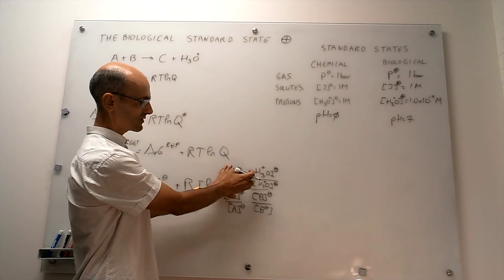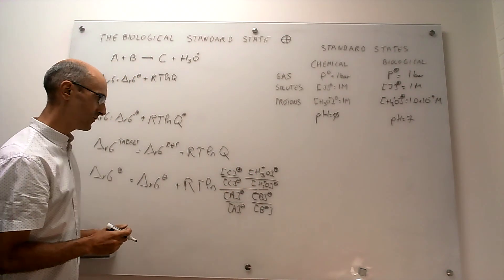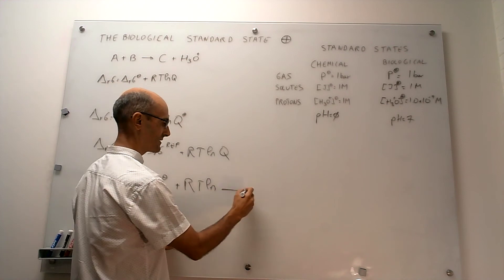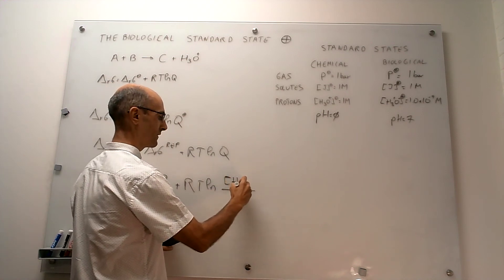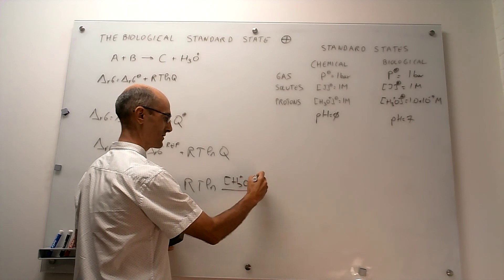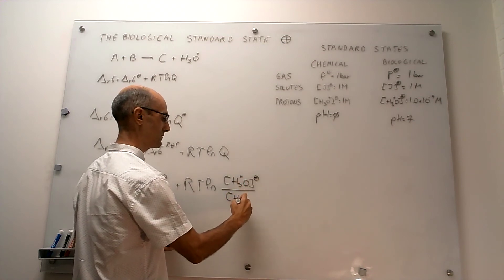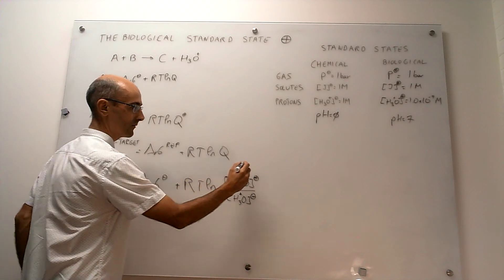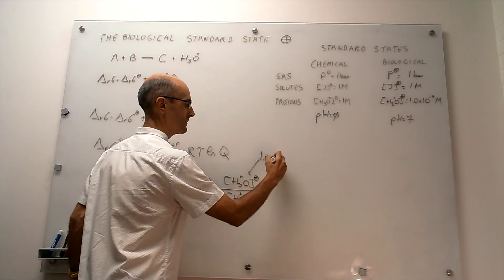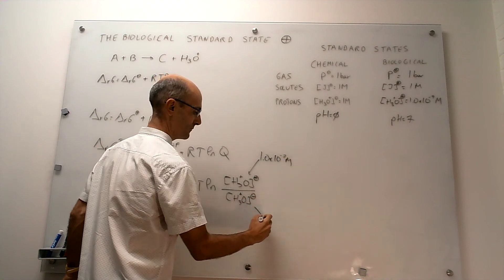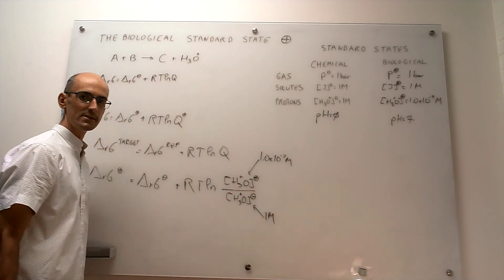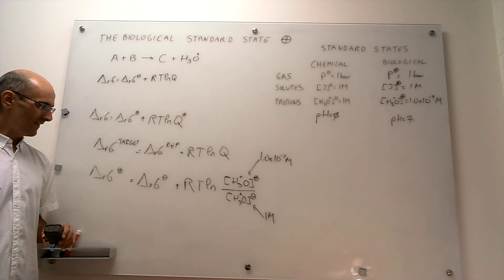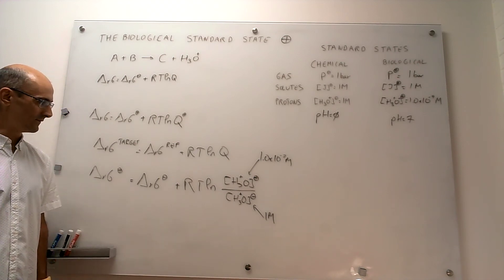The only difference is actually in the concentration of protons, which is the only thing that changes. Taking that cancellation into account, you can rewrite the entire reaction quotient as simply the concentration of protons at your target over the concentration of protons at your reference. That number is 1.0 × 10⁻⁷ molar for the biological standard state, and 1.0 molar for the chemical standard state. From this point on, calculating the biological standard state Gibbs energy from the chemical standard state is straightforward.